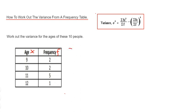We can do that by multiplying the first two columns together. So 9 times 2 is 18, 10 times 2 is 20, 11 times 5 is 55, and 12 times 1 is 12.